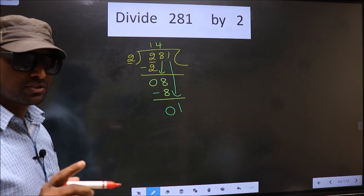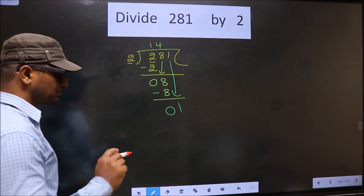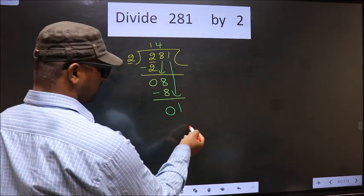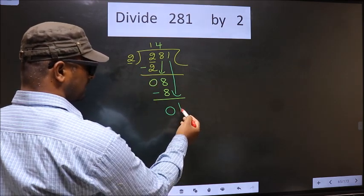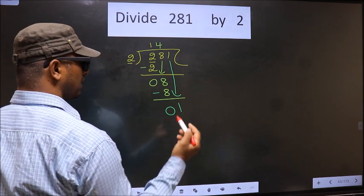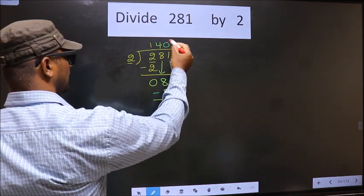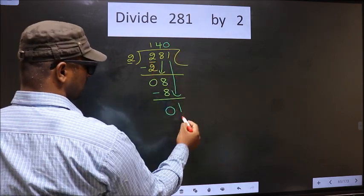Instead, what you should think of is, what number should we write here? If we write 2 here, that is larger than 1. So, what we do is we take 0 here. 2 into 0, 0.